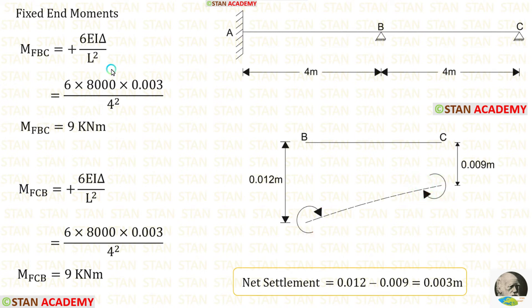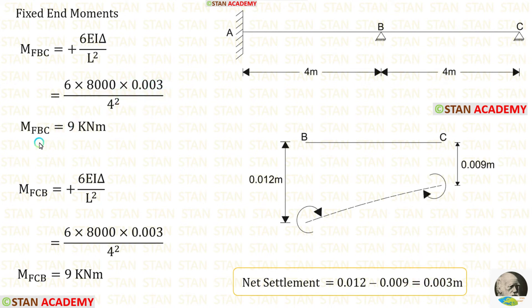Applying the values in the formula: EI = 8000, L = 4, δ = 0.003. After calculation, we get M_BC and M_CB.